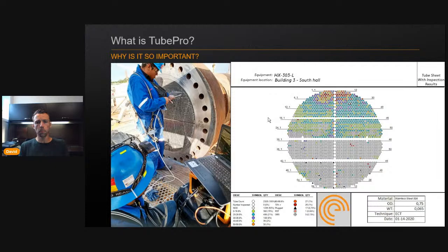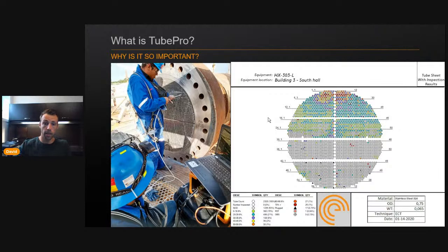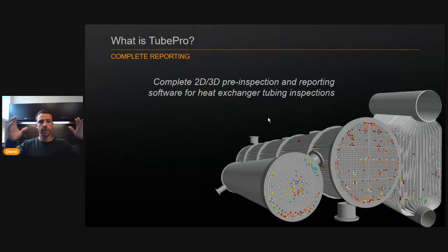That map is very important — it's the end goal for the inspection company but also for the asset owner. They base their decisions on it; they want to know what's going on in that exchanger, whether it will be fit for service for the next three to five years. So to help make the best report, we have TubePro.